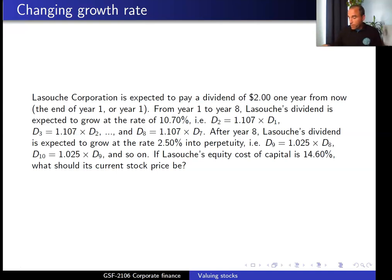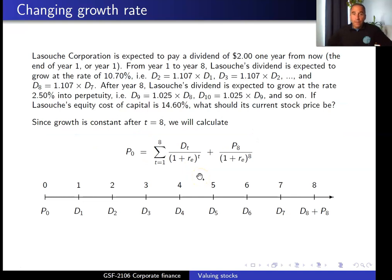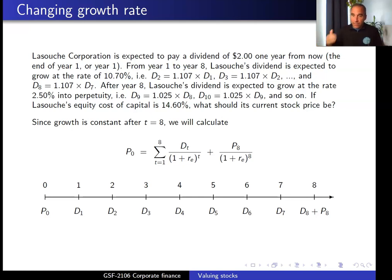If the company's equity cost of capital is 14.6 percent, what should its current stock price be? The stock price of the company is the sum of its dividends forever. The simplest way to solve this problem, since we have a growth rate that changes after year eight, is to compute the price as the discounted value of the first eight dividends plus the discounted value of P8.